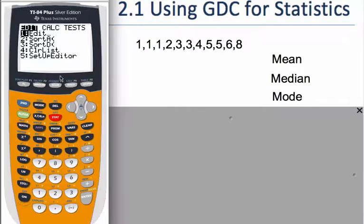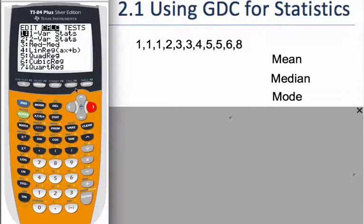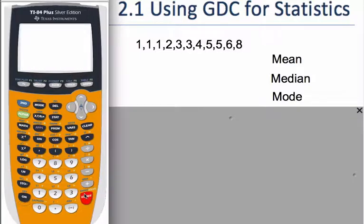We're going to calculate something and we're going to calculate one variable statistics. So I hit enter and then we have to tell what we're going to calculate the one variable statistics of.